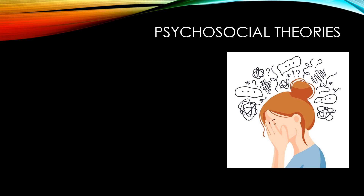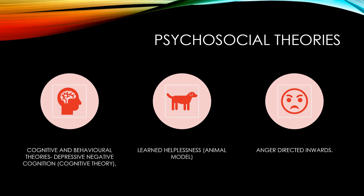Now let us look at psychosocial theories. Some psychoanalytical theories say that childhood adverse experiences and stressors can also lead to bipolarity or precipitate it, making it a lifelong illness. For depression specifically, the most commonly accepted theory is cognitive behavioral therapy, given by Aaron Beck. This theory says that negative cognitions or negative thoughts lead to depression, and focusing on these thoughts helps in treatment. CBT is a very important theory for the development of depression.